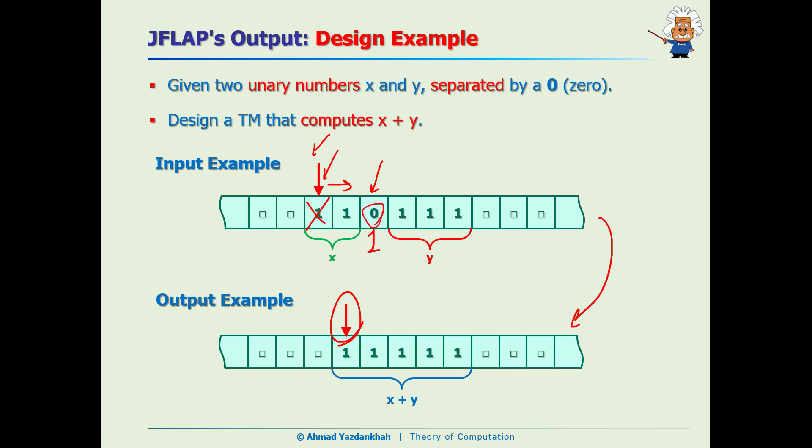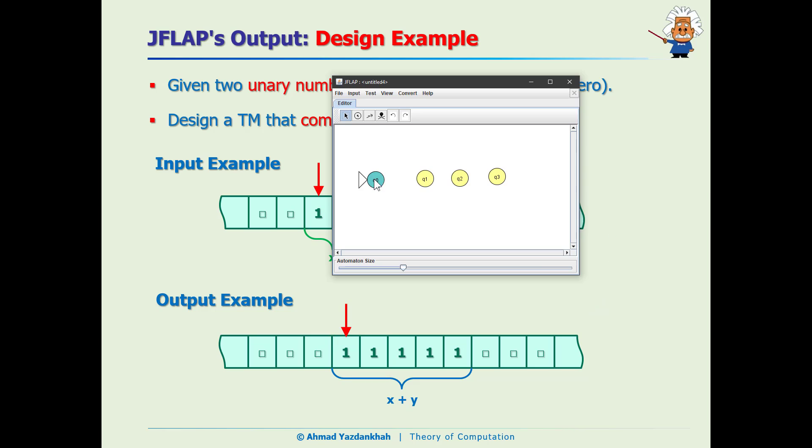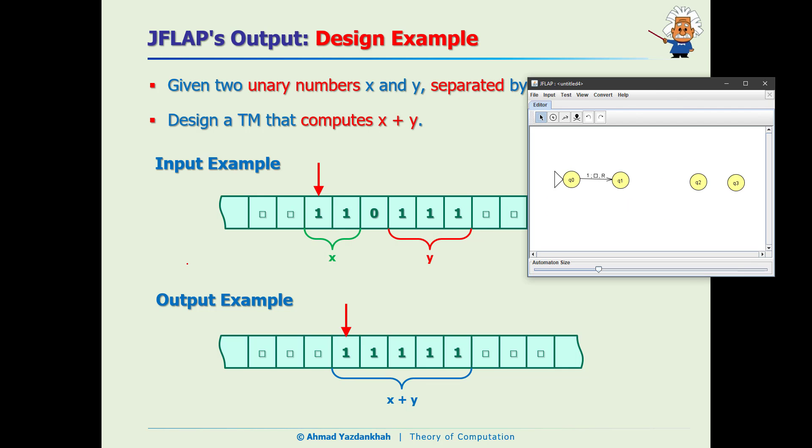So let's get started. First thing is we read: if it is one, then change it to blank and go to the right. And after that I need to bypass all of the ones to reach to this zero guy, so I would need a loop here. If it is one, don't change it to one, don't change it, go to the right.